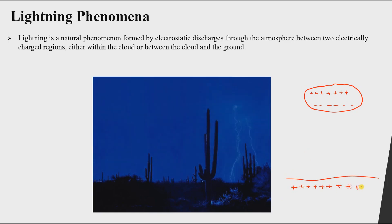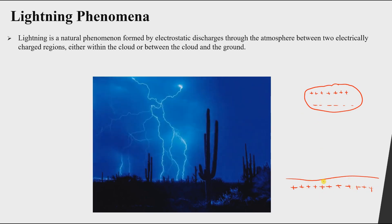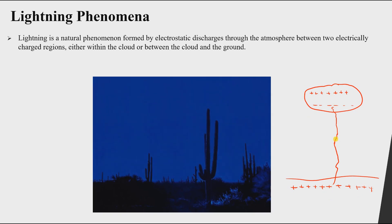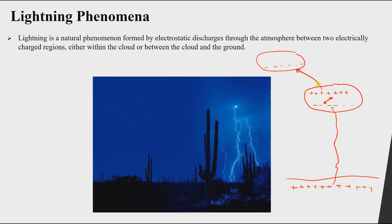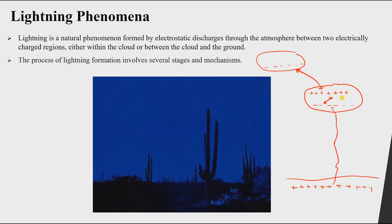The negative charges want to go to the positive charges and vice versa, so they start moving toward each other. When they make contact, we get the lightning phenomenon. This can occur between a cloud and the ground, inside the cloud itself, or between two clouds. Now let's understand where these electric charges come from.